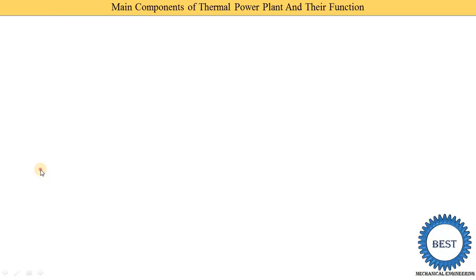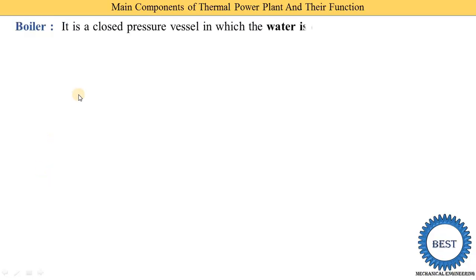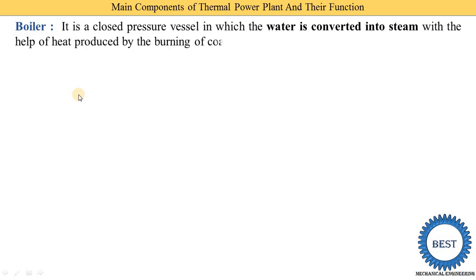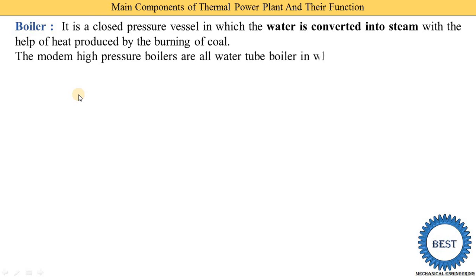First we understand the function of the boiler. It is a closed pressure vessel in which water is converted into steam with the help of heat produced by burning of coal. As a fuel, generally coal is used in all power plants, though some other fuels like wood and waste are also used nowadays. This heat energy produced by burning of coal is supplied to the water and the water is converted into steam — this is the basic function of the boiler.